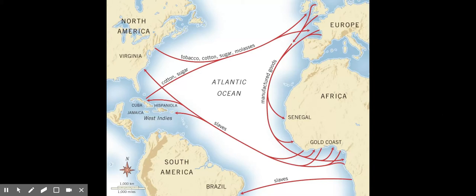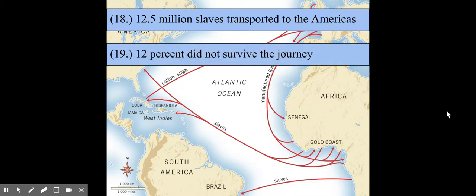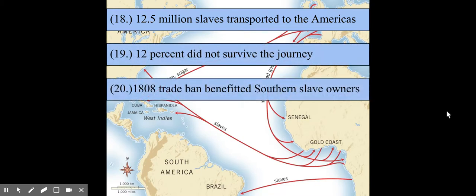This is how the transatlantic slave trade operated for upwards of 200 years — actually longer than 200 years, by far. All in all, about 12.5 million slaves were transported to the Americas, and 12% did not survive the journey. Finally, in America in 1808, the slave trade was banned. This ban actually benefited Southern slave owners because with fewer slaves coming in, the value of their existing slaves increased — less supply with high demand raises value.